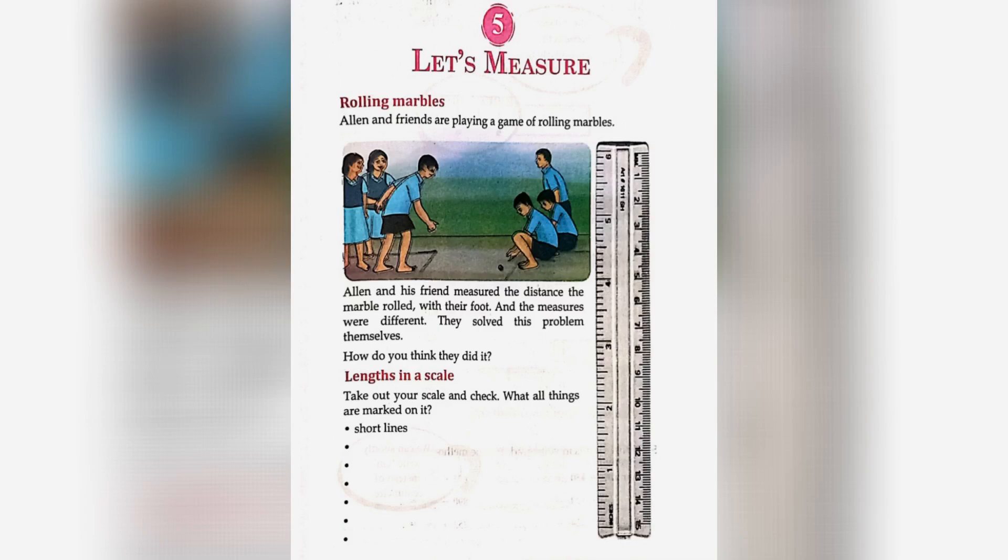Lesson 5: Let's Measure Rolling Marbles. Alan and friends are playing a game of rolling marbles. Alan and his friend measured the distance the marble rolled with their foot, and the measures were different. They solved this problem themselves. How do you think that they did it?